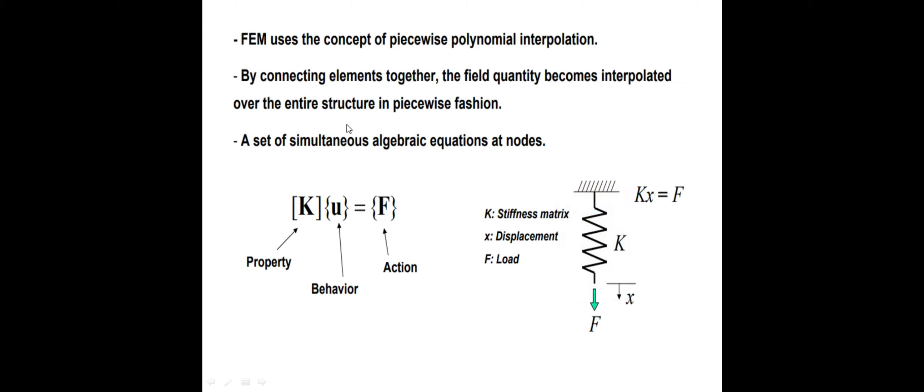FEM uses the concept of piece-wise polynomial interpolation. Piece-wise polynomial means each node has polynomial equations we are going to consider. With help of all those equations through connectivity — adding of all equations — that is how finite element uses piece-wise polynomial interpolation by connecting elements together. The field quantity becomes interpolated. Field quantity is the unknown variable — like stress, strain, temperature, displacement — these are all field quantities that become interpolated.